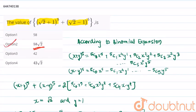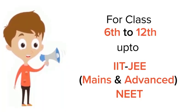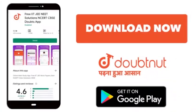Which is option number 2. For class 6 to 12, IIT-JEE and NEET level, trusted by more than 5 crore students, download Doubtnet.